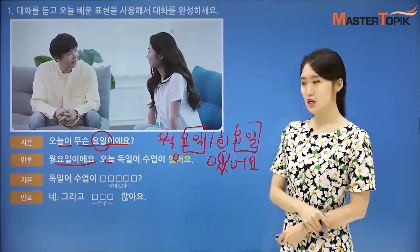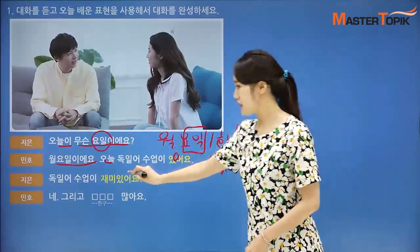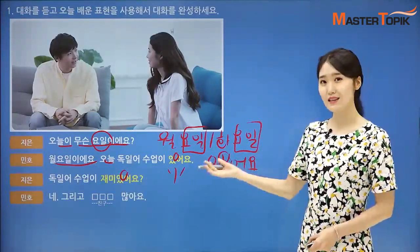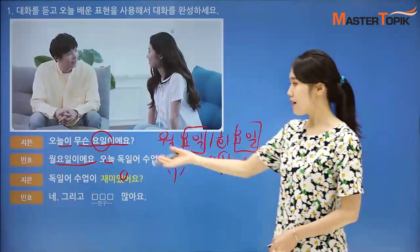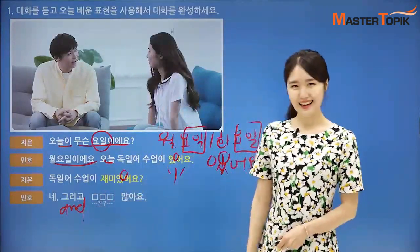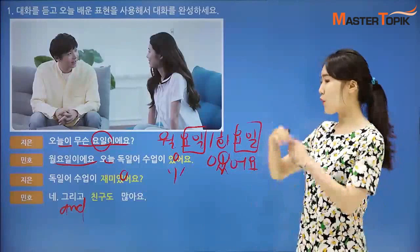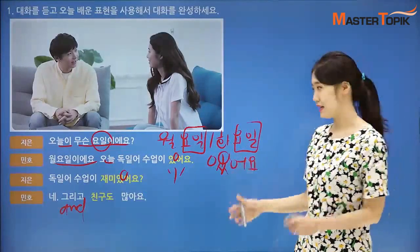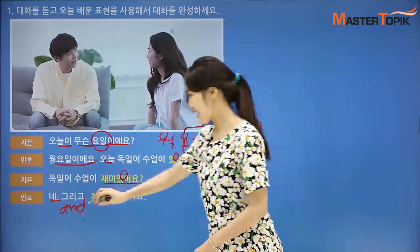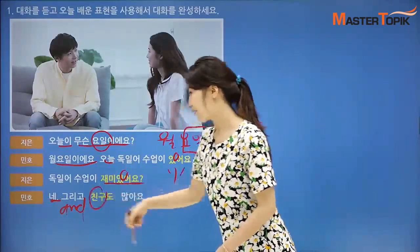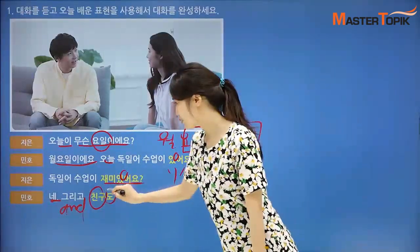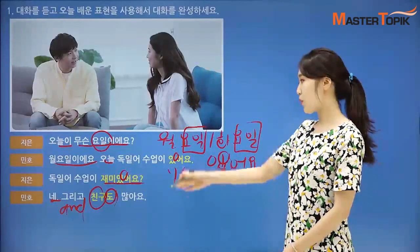독일어 수업이 재미있어요 — vowel 이, so 재미있어요. Is this class fun? Interesting? 네. 그리고 — 그리고 means 'and.' 친구도 많아요. 많다 means 'many.' It's fun, and also, a lot of friends. So she used 도 — 친구도 많아요.